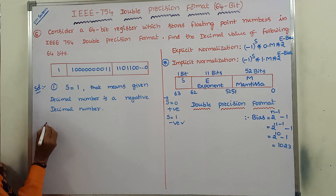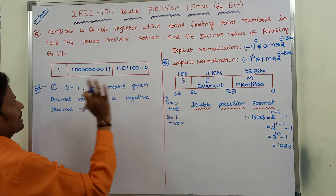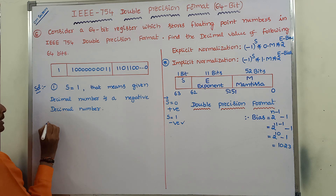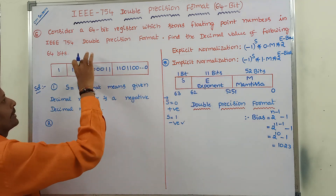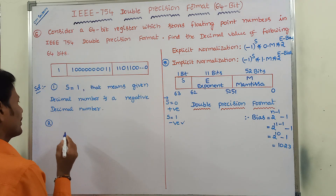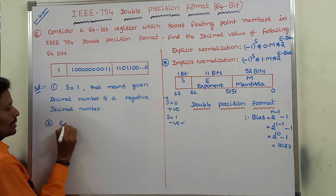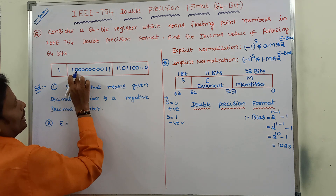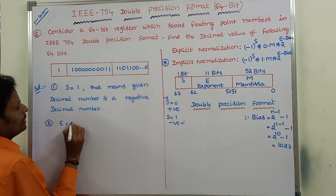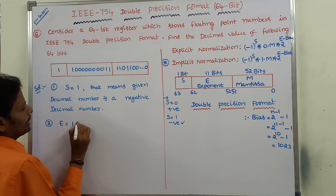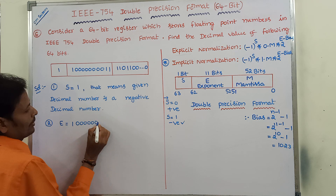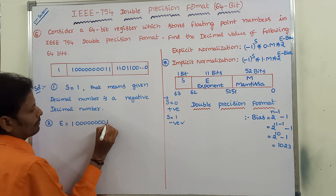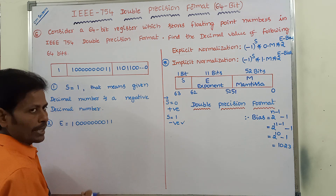Next, we know the S value. Now, comparing the exponent field, the E value is 11 bits: 1, 0, 0, 0, 0, 0, 0, 0, 0, 1, 1 — total 11 bits. Now we have to find out the equivalent decimal value of these 11 bits.